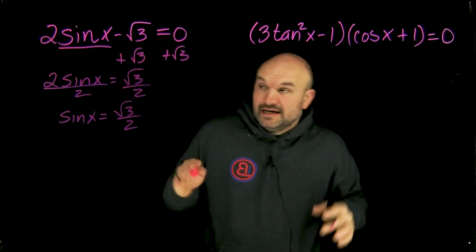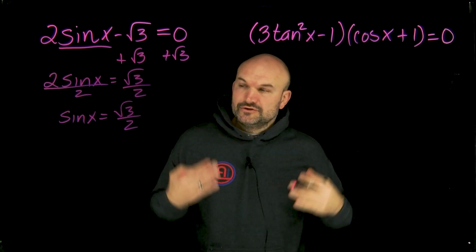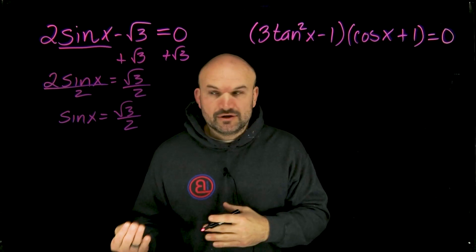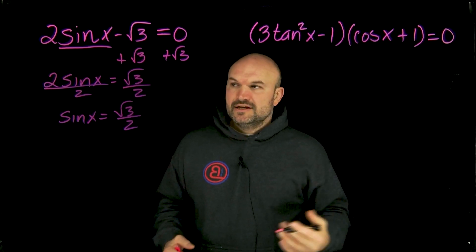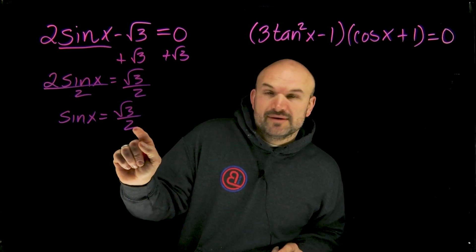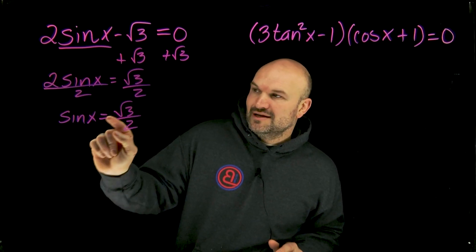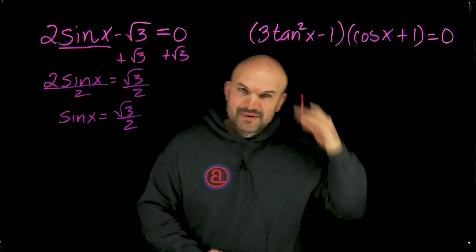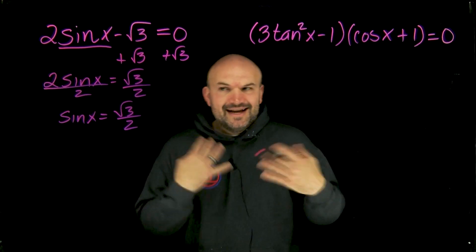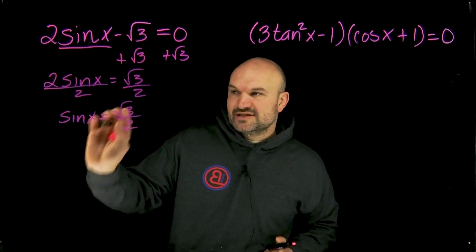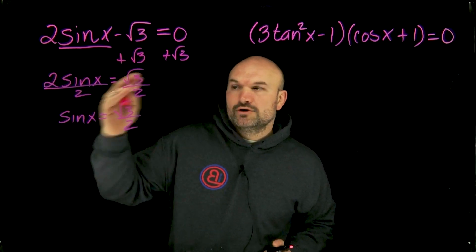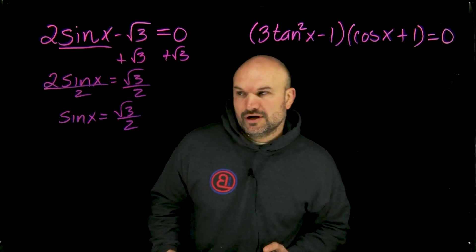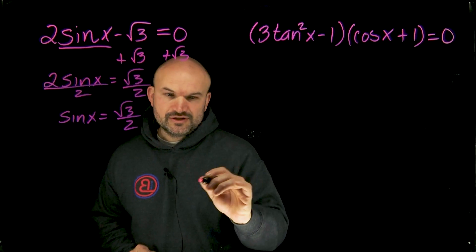Now we have sine of x is equal to the square root of three over two. Remember, the sine of an angle when we're looking at the unit circle is the y-coordinate. So we're hoping that's a y-coordinate on the unit circle so we can easily identify what this angle is. Sometimes we have this memorized, and sometimes we just need to do a quick sketch to understand which y-coordinate for which angle gives us square root of three over two. Let's draw a quick sketch of the unit circle.